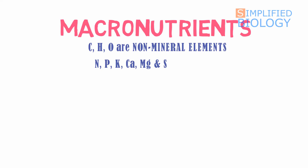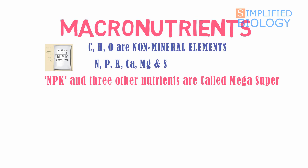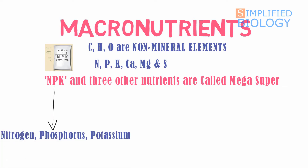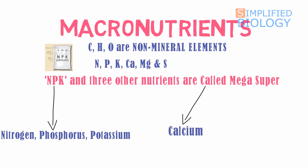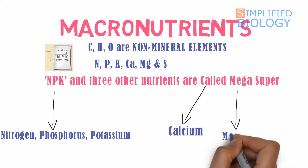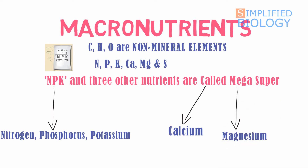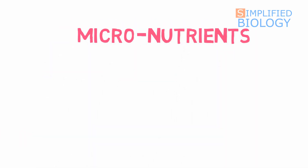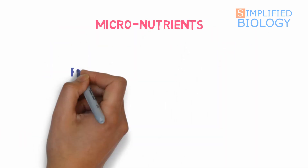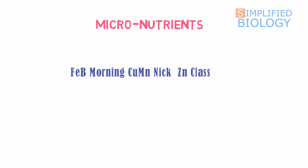Next, the macronutrients: carbon, hydrogen, and oxygen are non-mineral elements. Besides these, nitrogen, phosphorus, potassium, calcium, magnesium, and sulfur — remembered as 'mega super' — NPK implies nitrogen, phosphorus, and potassium. CA of 'cold' implies calcium. Mg of 'mega' implies magnesium. S of 'super' implies sulfur. The micronutrients mnemonic is: 'February morning, come on Nick, join class.'